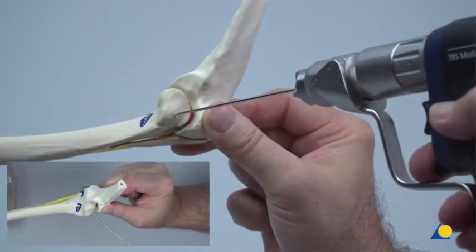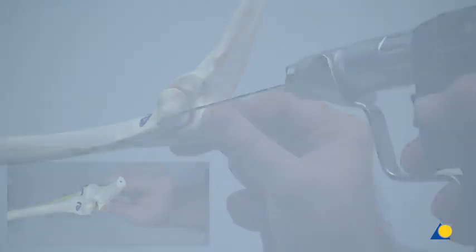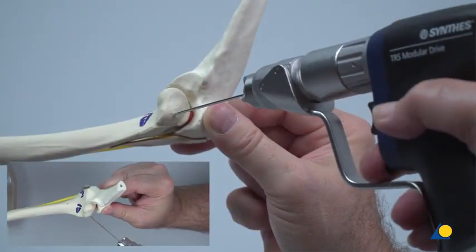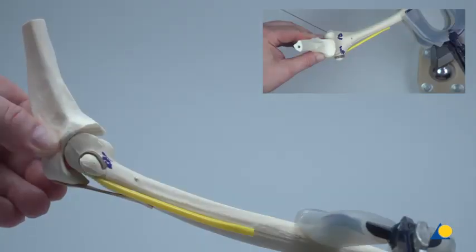In order to achieve satisfactory fixation from the radial side, the K-wire is inserted in the direction of the shaft axis. The bone model is rotated 180 degrees to visualize the medial approach.